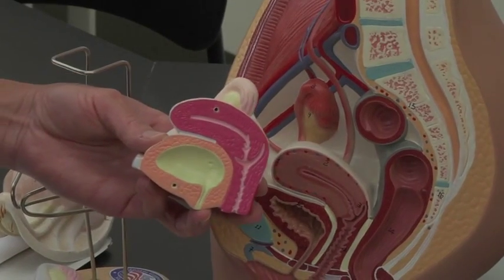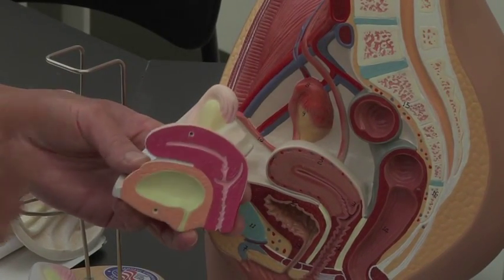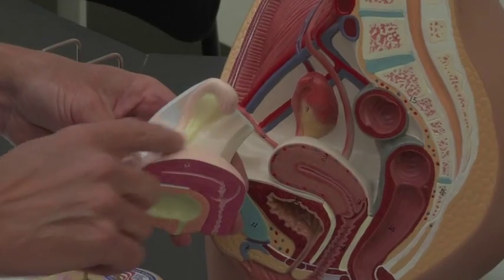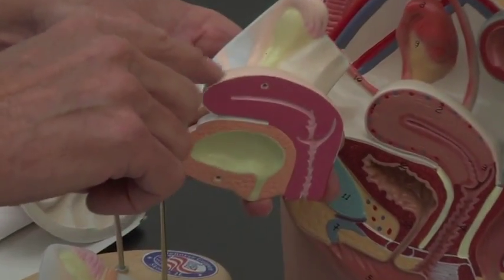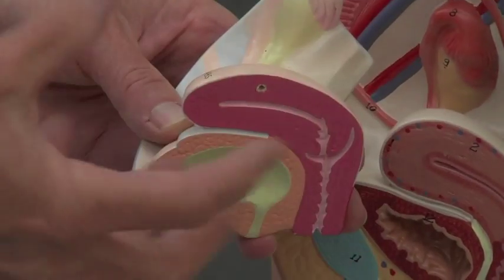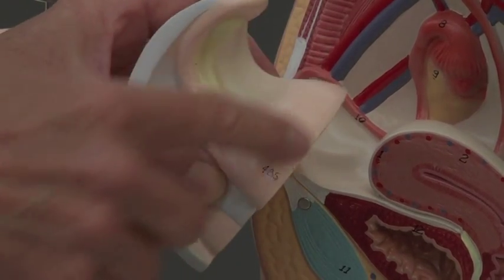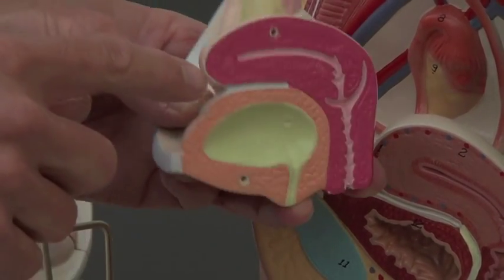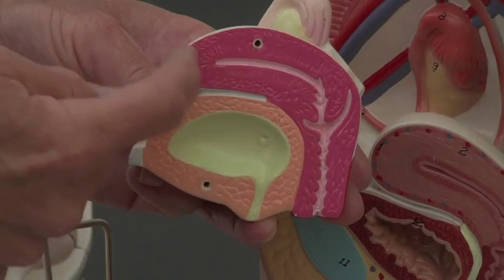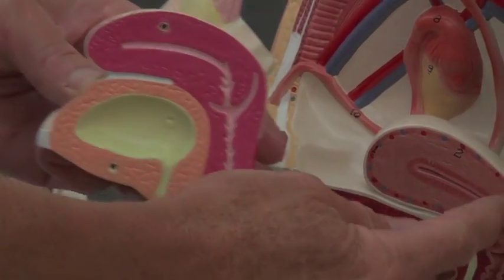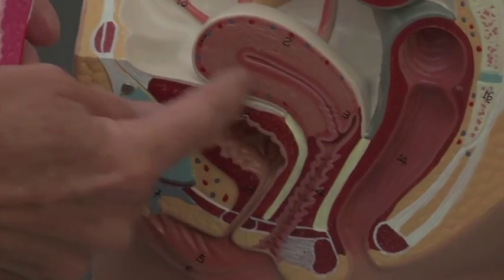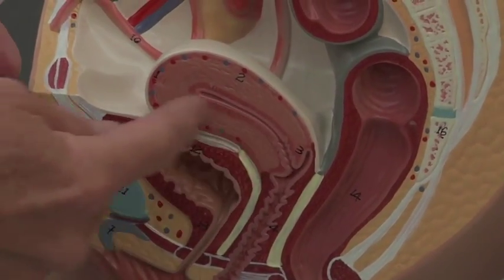The uterus has actually three layers. You've got this outer covering here which is known as the perimetrium—peri meaning around—so this outer layer around the outside edge is your perimetrium. And then you have this thick muscular layer that you can see right there, also see it in this model. That thick muscular layer there is known as the myometrium, myo referring to muscle.